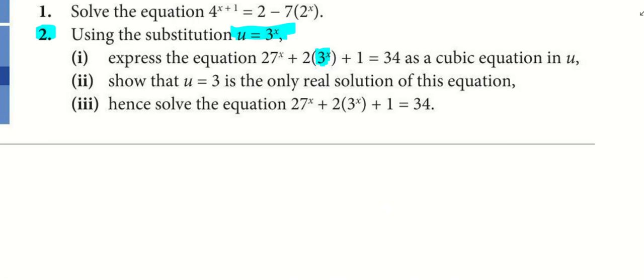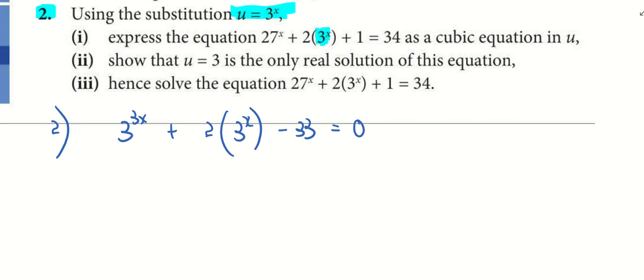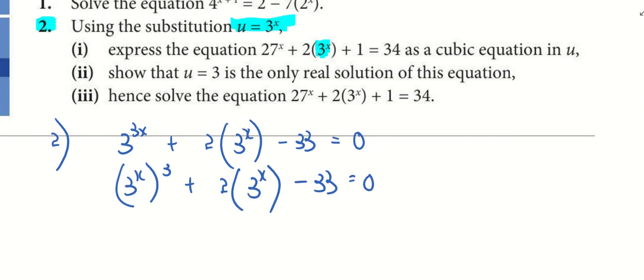Okay, so if you take a look at question 2, the question specifically says use u to substitute 3 to the power of x. So everything must be in base 3. But I only want 3 to the power of x. So remember to rearrange. Instead of having 3 to the power of 3x, I must have 3 to the power of x bracket power 3. So straight away, replace your 3 to the power of x by u.